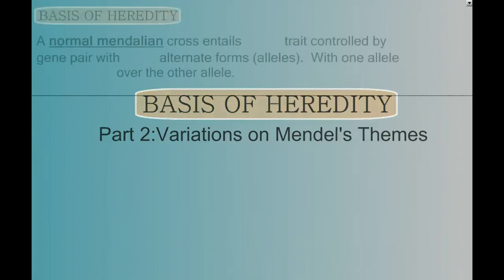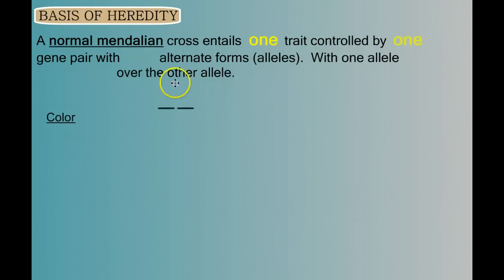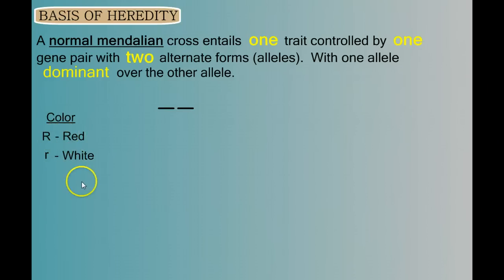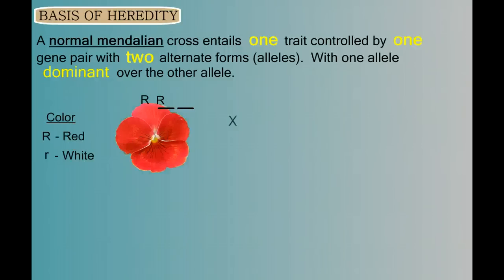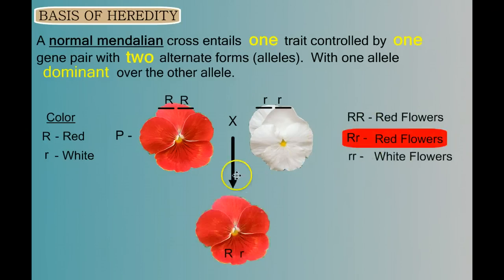In a normal Mendelian cross, we have one trait — let's say color — controlled by one pair of genes. They come in two alternate forms, let's say red and white, with one allele usually dominant over the other. So we'll give a capital R to the red and a little r to the white. If we cross a homozygous dominant red flower with a homozygous recessive white flower, all of our offspring would be heterozygous and red. That's our normal Mendelian cross.